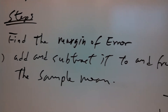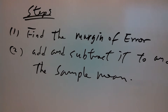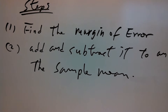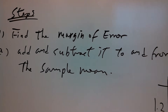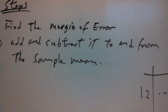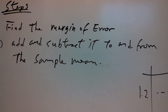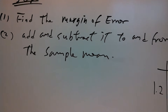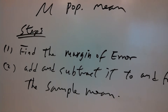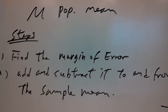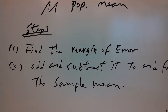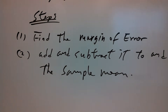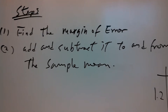Step number one, we find the margin of error. Step number two, we add and subtract the margin of error to and from the sample mean. And that gives us our confidence interval, which is what we're looking for — it gives us an estimate of the population mean, using the sample mean.